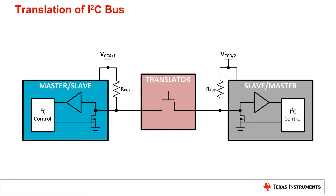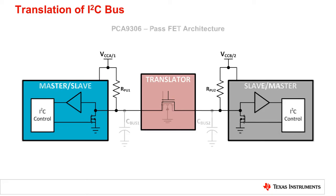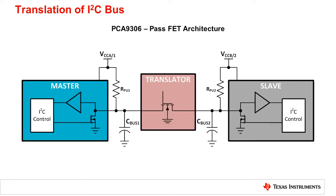It is clear that this voltage level mismatch must be fixed, and that is done with a translator, which is sometimes called a level shifter. Typically, translation for I2C is done using a pass-FET architecture, which provides voltage level isolation while providing a method to pass a low signal, but it does not provide a means to isolate bus capacitances. We need to look inside a pass-FET translator to understand how it works.